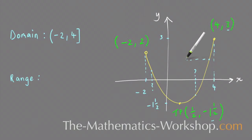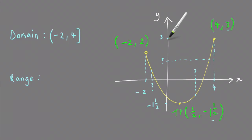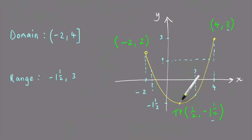I can pick any point on the curve and no matter where I pick that point, the y value — going across to the y-axis — is going to be somewhere between minus one and a half and three. So all the y values on the graph are between minus one and a half and three. The lowest value minus one and a half is included because that turning point does not have an open circle like this point here.